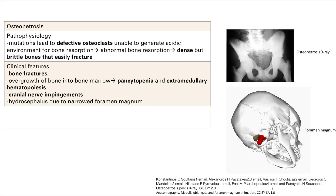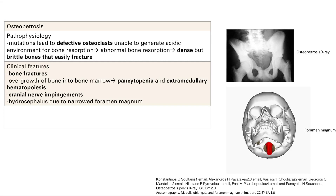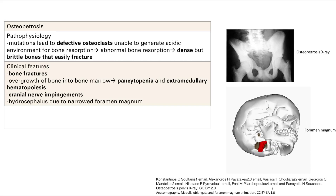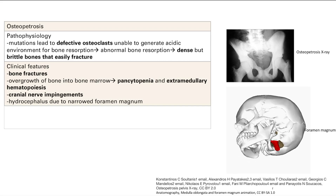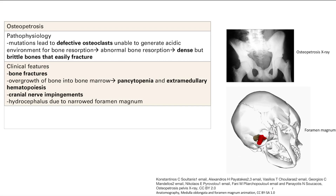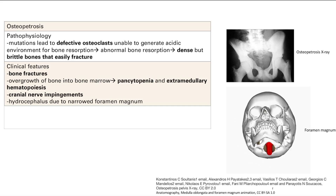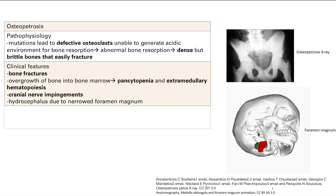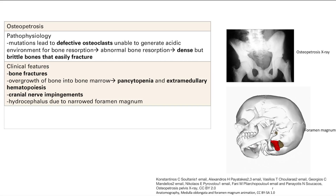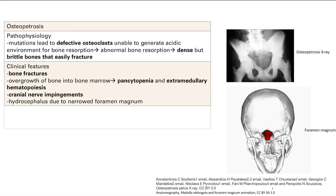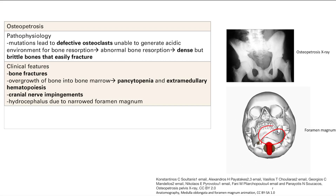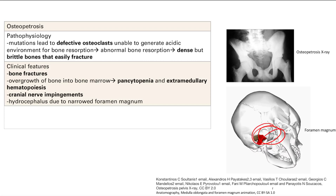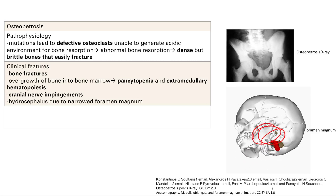You're going to get extramedullary hematopoiesis. You normally make blood in your bone marrow, but you can also make it in other parts of your body such as the spleen, the liver, and lymph nodes, so you're going to get enlargement of all those structures. You're going to have cranial nerve impingements — your skull is a very tight area, and if bones enlarge because they're super dense and osteoclasts can't shave them down, you get cranial nerve deficits. Your foramen magnum can become narrowed because too much bone is built, which can lead to poor CSF flow and hydrocephalus.